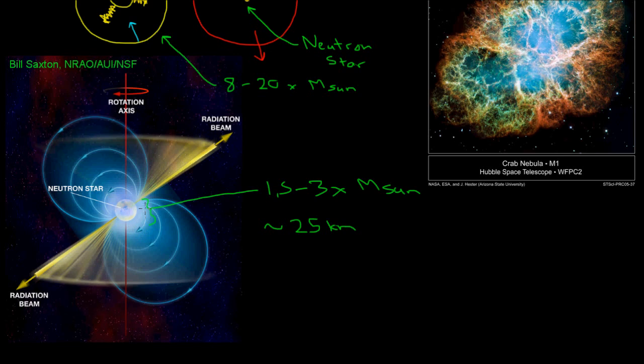These objects are so small and massive that their surface gravity is about 200 billion times stronger than the surface gravity on Earth. So on this neutron star, you would feel 200 billion times heavier than you do on the Earth. So again, these neutron stars have some very extreme physical characteristics to them.